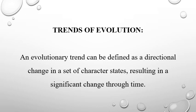Now, let's define the term Trends of Evolution. An evolutionary trend can be defined as a directional change in a set of character states resulting in a significant change through time. Organic evolution is the change of species through time. Evolution is one of the major unifying themes in biology because it helps to explain the similarities and diversity of life.